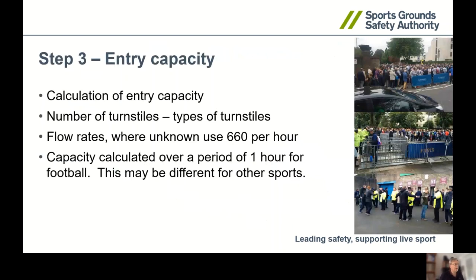Step two is looking at the entry capacity. The entry capacity is based on the number of ingress points or turnstiles, and then we multiply that by a flow rate. The Green Guide gives a flow rate of 660 per hour. So if you had 10 turnstiles, times that by 660, and that stand would be able to accommodate 6,600 people. This calculation is normally done over an hour for football, where generally people turn up around 10 minutes before kickoff. It can be different for different sports. However, if you're going to deviate from that hour, I would suggest you do a risk assessment and look at your historical data.